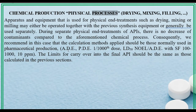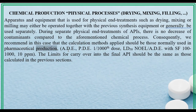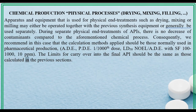Chemical production — physical processes: drying, mixing, filling. Apparatus and equipment used for physical end treatments such as drying, mixing, or milling may either be operated together with the previous synthesis equipment or generally be used separately. During separate physical end treatments of APIs, there is no decrease of contaminants compared to the aforementioned chemical process. Consequently, in this case the calculation methods applied should be those normally used in pharmaceutical production: ADE/PDE, 1/1000th dose, LD50, NOEL/ADE with SF 100 to 1000, 10 ppm. The limits for carryover into the final API should be the same as those calculated in the previous sections.